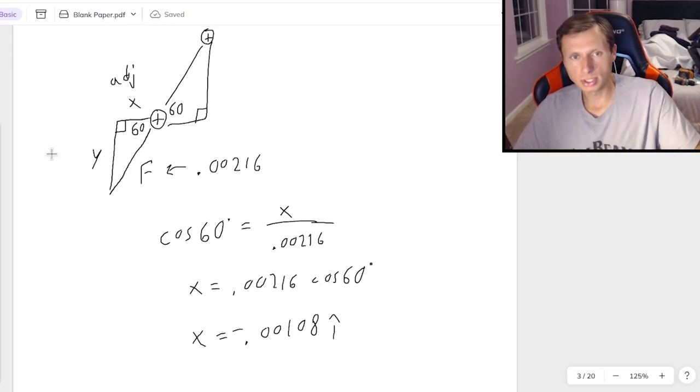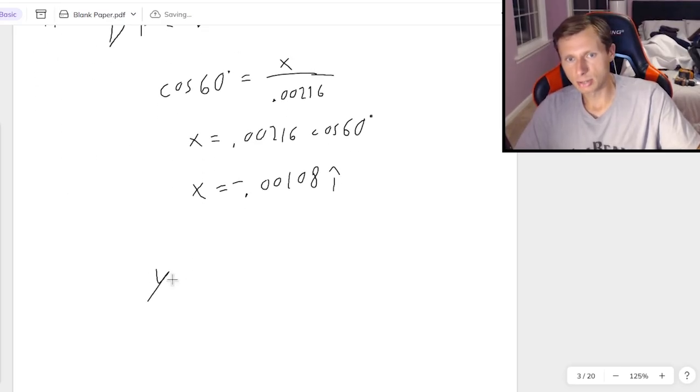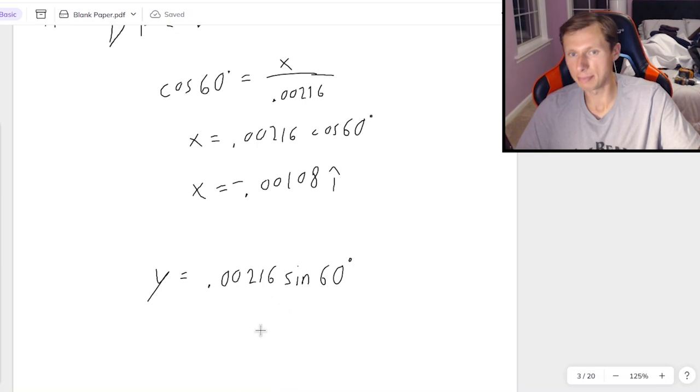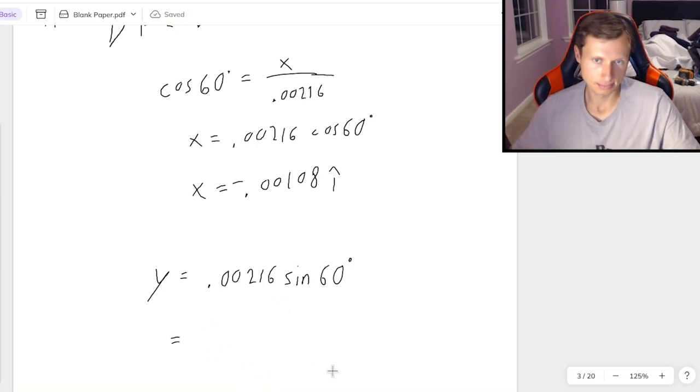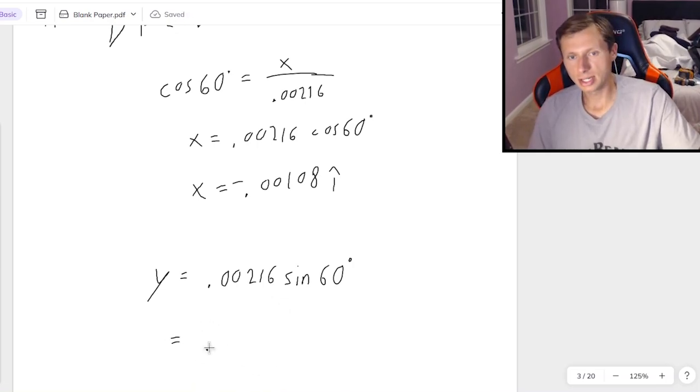Then for the y component, the y component is the opposite leg. So what that means is, I'll just show you a shortcut here. If x was 0.00216 cosine, y has to be 0.00216 sine of 60. And again, that's because y is the opposite leg in this problem. And that's going to get me an answer of 0.00187.